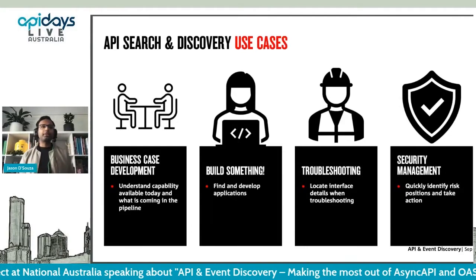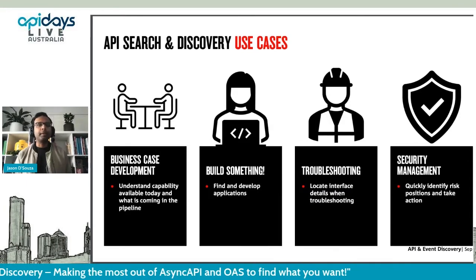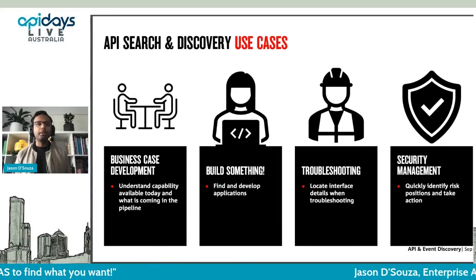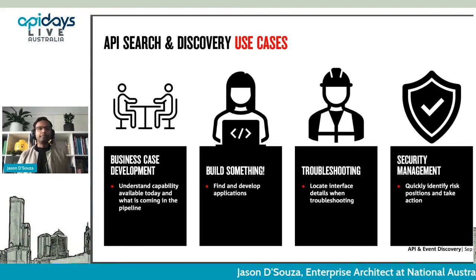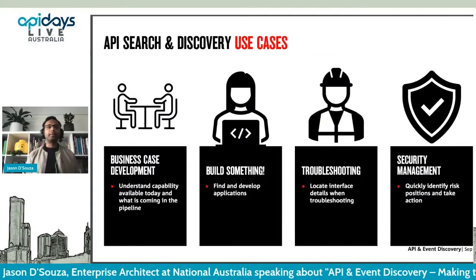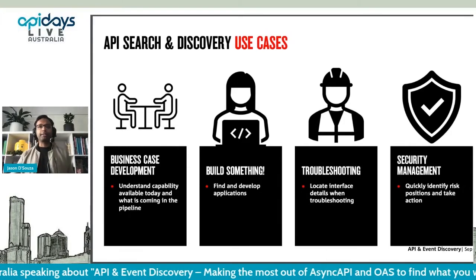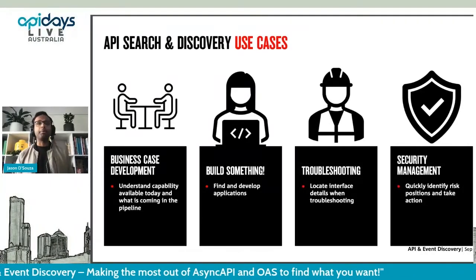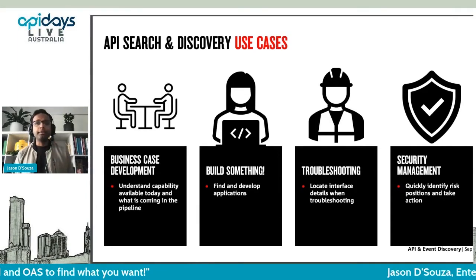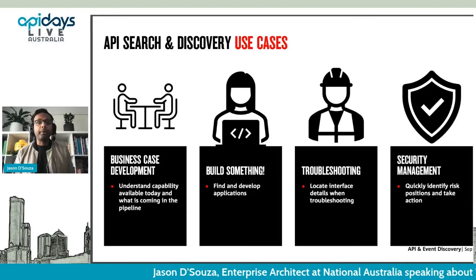The last two use cases are probably not thought about so much. After we've built something and it's in production, when there is an issue, it's quite handy to be able to quickly search for the interface that is causing the problem — typically there's a URI, some error codes. Being able to locate the details down to the field level and error level is quite useful. And security management is similar — understanding your risk position, what data has been exposed through the interface, so you can take the appropriate actions.